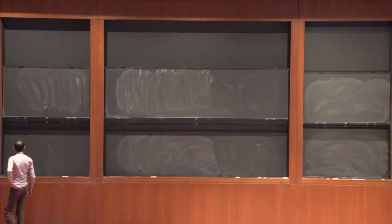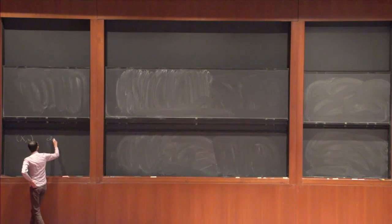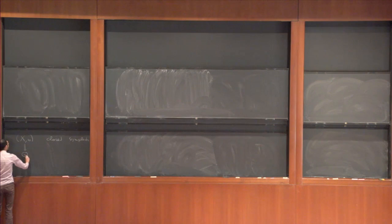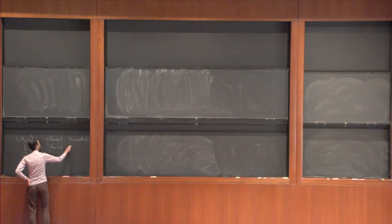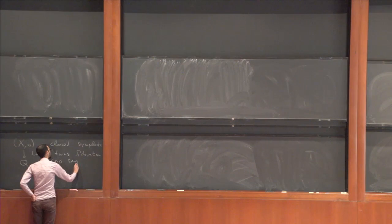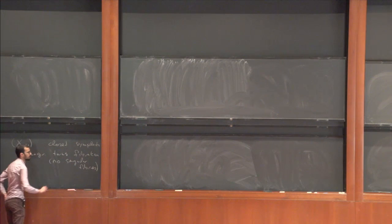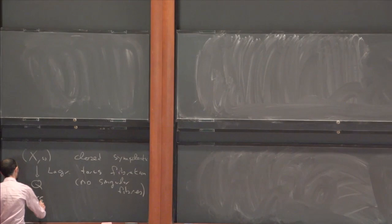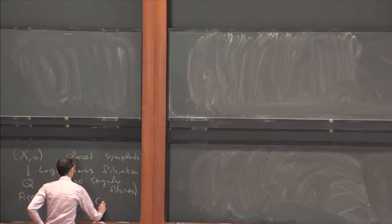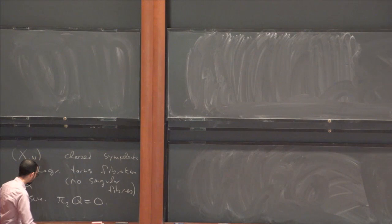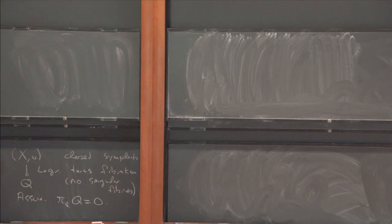You take X omega and you assume that this is a closed symplectic manifold, equipped with some Lagrangian torus fibration. In this talk, what that means is that there are no singularities — no singular fibers. I'll say something about examples in a moment. I want to have one technical condition, which I'm stating for honesty's sake: I'm going to assume that π₂ of Q is zero. I don't know a single example of a closed symplectic manifold with Lagrangian torus fibration that doesn't satisfy this, but it's actually an open problem whether one can prove that this is always the case.